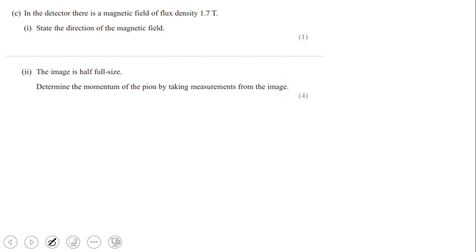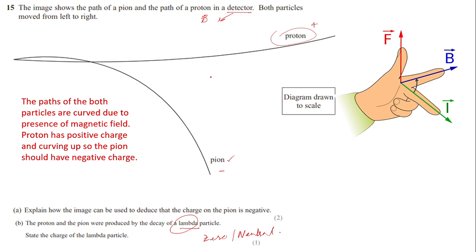In the detector there is a magnetic field of flux density 1.7 tesla. State the direction of the magnetic field. To find the direction, go back to the diagram and use Fleming's left-hand rule. On your left hand, the first finger points towards the magnetic field, the second finger points towards the direction of current or motion.